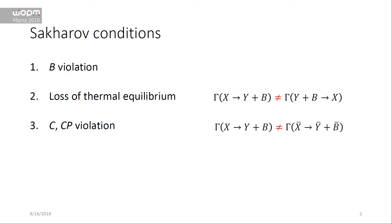The conditions for dynamically generating a baryon asymmetry are called the Sakharov conditions. The first is baryon number violation — straightforwardly, to generate a baryon asymmetry you need to violate baryon number. The second is a departure from thermal equilibrium: at thermal equilibrium, the inverse process is equally likely, so you need interactions that happen outside of thermal equilibrium.